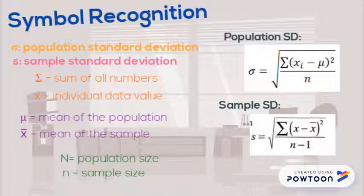In the population formula, you would use the capital N and Mu because we are dealing with the population. In the sample formula, you are using lowercase n and X-bar because we are dealing with the sample.